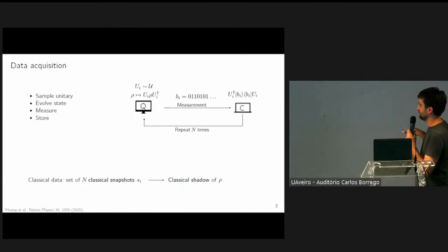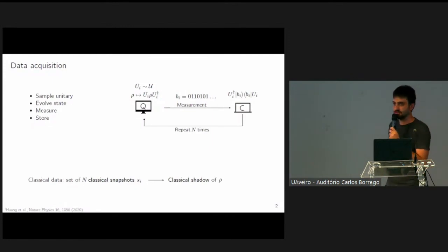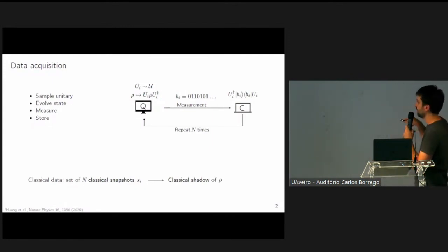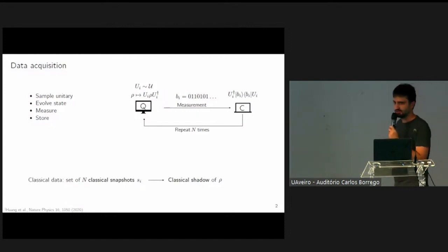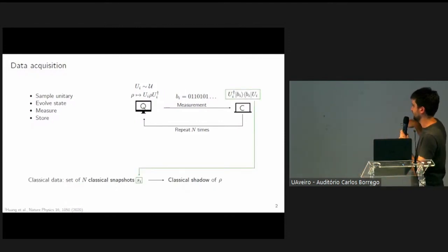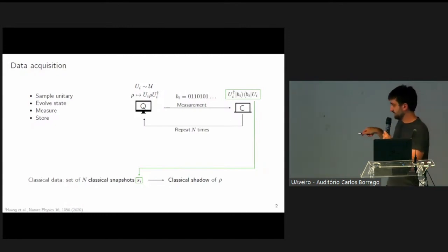As I said, it's based on randomized measurements. One first draws a unitary from some unitary ensemble, which I call U. We apply the unitary to the state and measure in the computational basis, which results in some measurement result. Then we revert the rotation. This is the state that we actually store on the classical computer. For the purpose of this talk, I will call this state a classical snapshot, S. We repeat this process many times, N times. The classical data that we collect is called a classical shadow. This is a set of N of these snapshots.